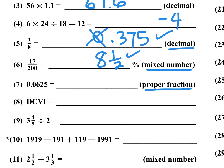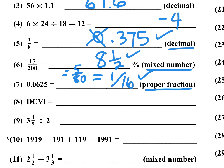Number 7: What is 0.0625 as a proper fraction? That's the same as 6 and a quarter percent, which is 1/16 as a proper fraction. If you didn't know that, consider: multiply by 10 to get 0.625, which you know is 5/8. Since you multiplied by 10, divide by 10 — so 5 over 80 simplifies to 1/16. The correct answer is 1/16.